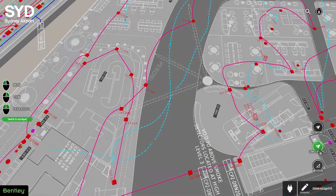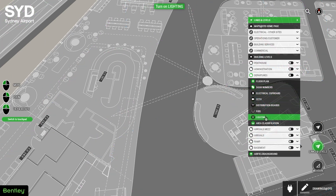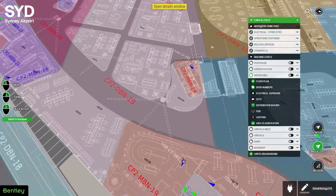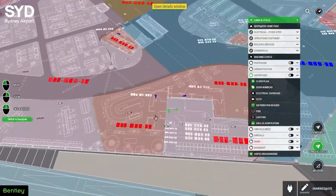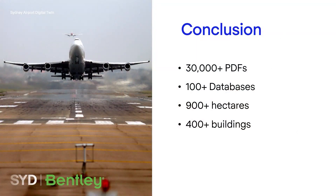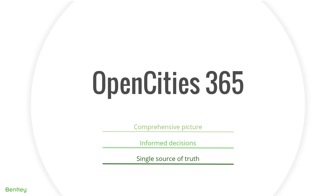Having the architectural floor plans and area classification as a background in the discipline sites allows end users to turn on floor plates above and below the services to see what and who is impacted during projects. This not only provides our facilities management team vital information, but also helps our commercial team in ascertaining who will be affected during maintenance shutdowns. Our digital print room houses close to 30,000 PDFs generated from hundreds of the spatial team's databases, representing the infrastructure of the 906 hectares and over 400 buildings that make up the Sydney Airport campus. Whilst there will always be a need to generate static PDFs for regulatory requirements or practicalities, Open Cities allows these drawings to come to life, giving end users the ability to mix and match data to create a comprehensive picture of the campus, enabling them to make informed decisions from a single source of truth.